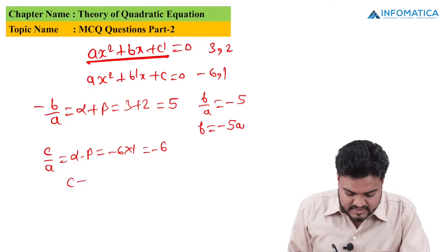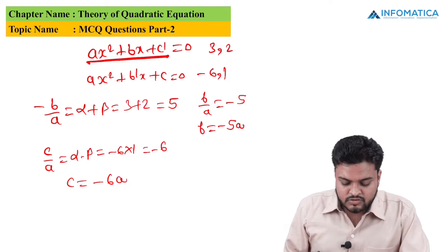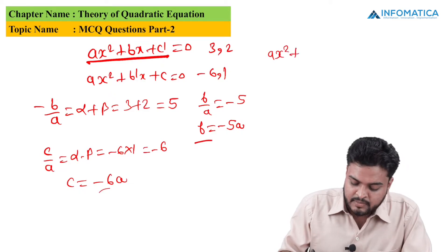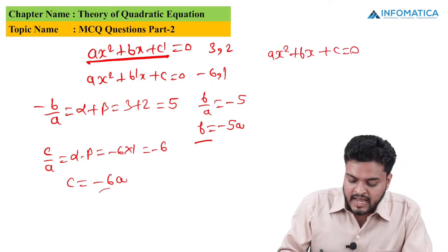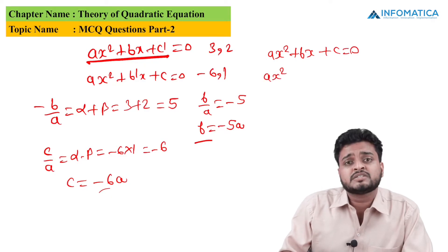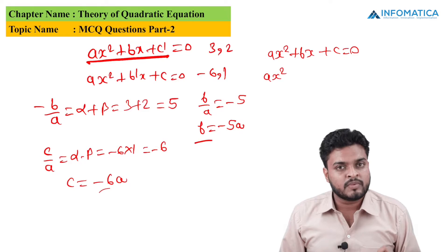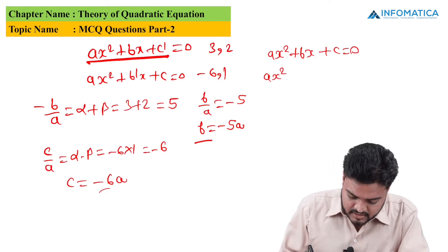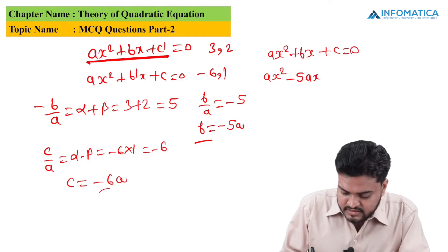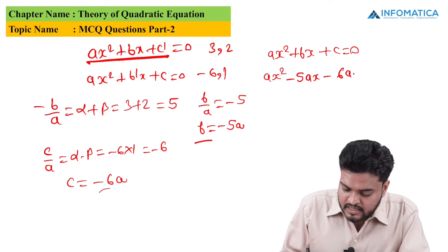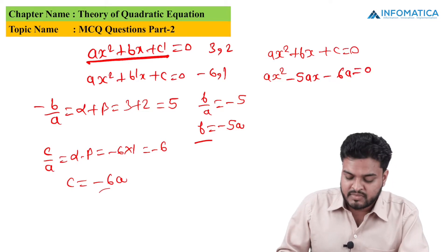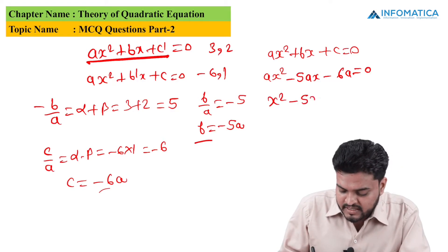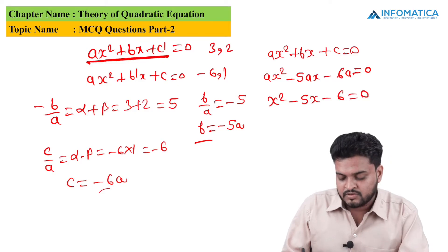Now substitute the values of b and c into the original equation ax² + bx + c = 0. We get ax² - 5ax - 6a = 0. Taking a common and dividing through, the equation becomes x² - 5x - 6 = 0.